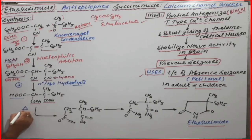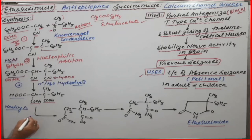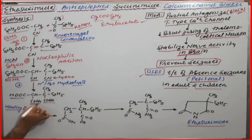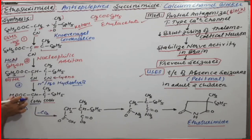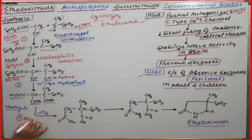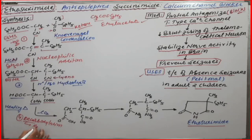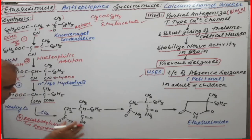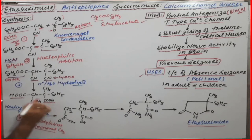The tricarboxylic derivative is then subjected to heating at high temperature. This is the fourth reaction — decarboxylation — which is the removal of CO₂. One carboxylic group is removed as CO₂, converting the tricarboxylic intermediate into a dicarboxylic acid derivative.